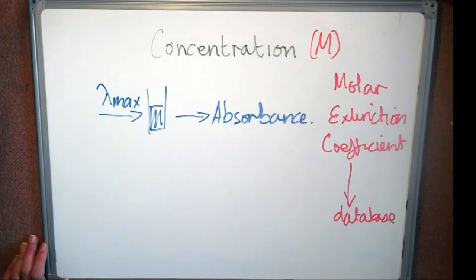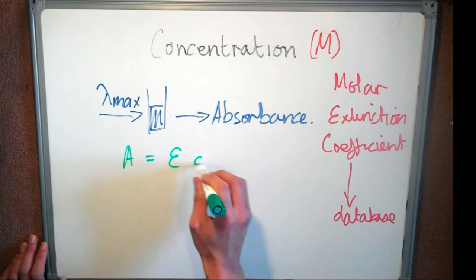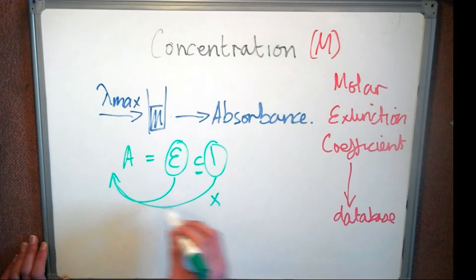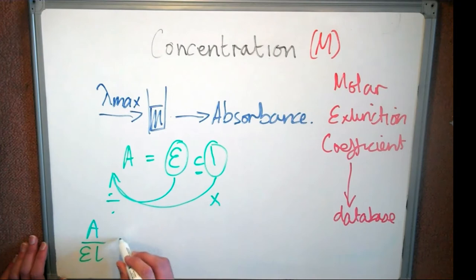Using the Beer-Lambert law, we can rearrange to make concentration the subject. We move times eL to the other side of the equation and inverse the sign to divide. Because we are using a spectrophotometer which holds a cuvette of width 1cm, path length can be ignored.